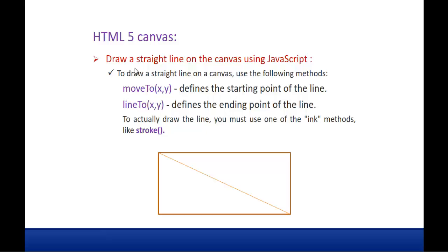Now let us jump into the actual session. Our objective is to draw a straight line on the canvas using JavaScript. To draw a straight line we need to use the following methods. The first method is moveTo — it takes two parameters, x and y values, and defines the starting point of the line, telling from which x and y coordinates the line has to start. The second method is lineTo — it defines the ending point of the line, where you pass x and y coordinates for the ending point. Finally we have to use the stroke method to actually draw the line on the canvas.